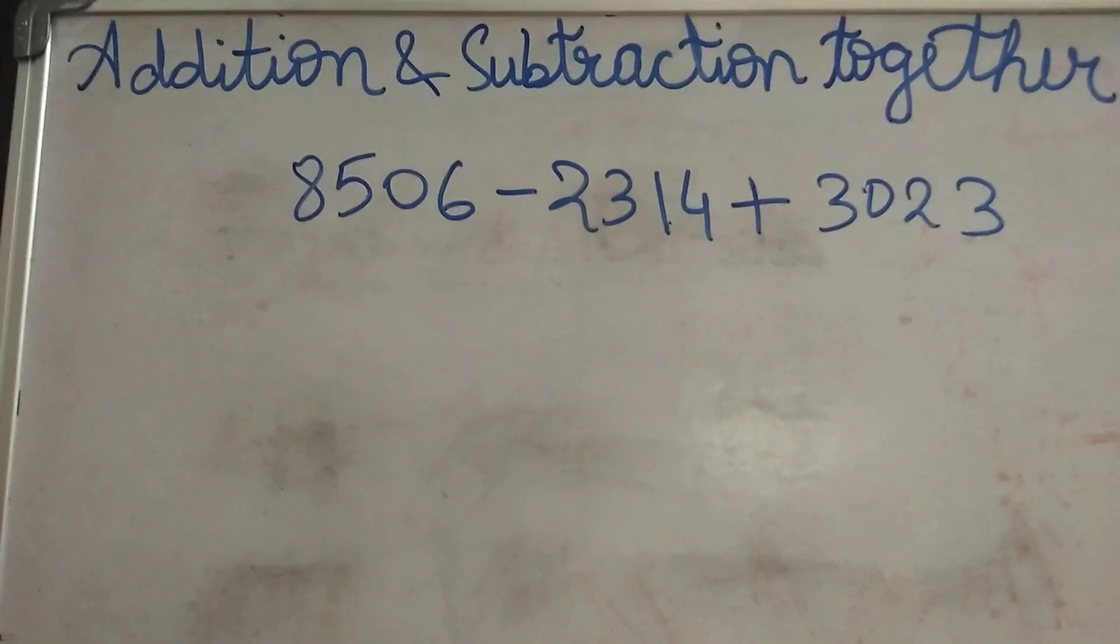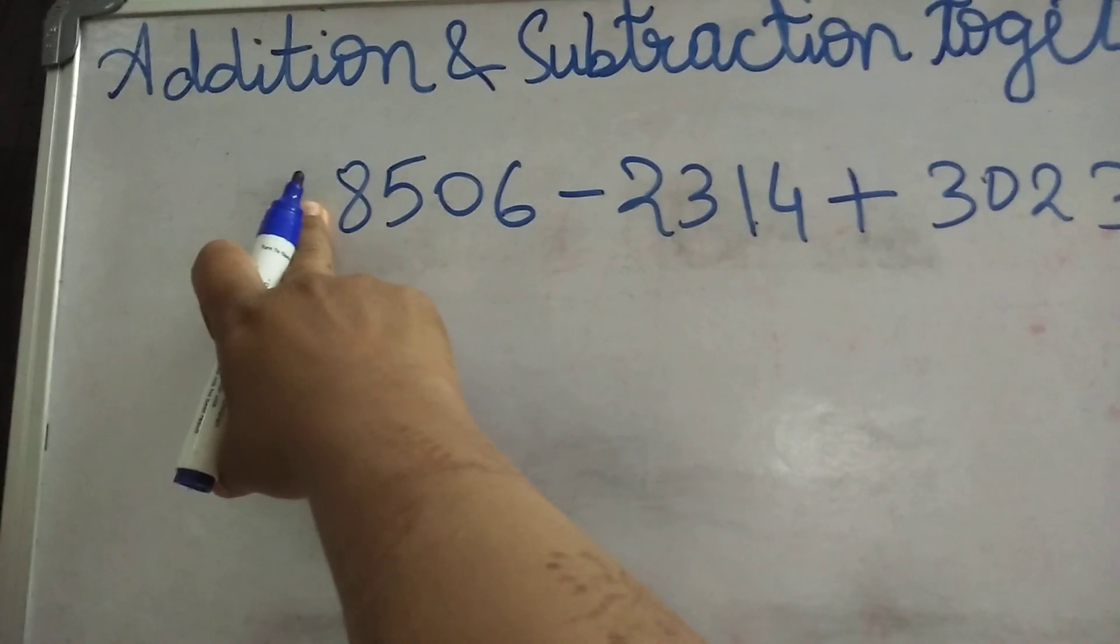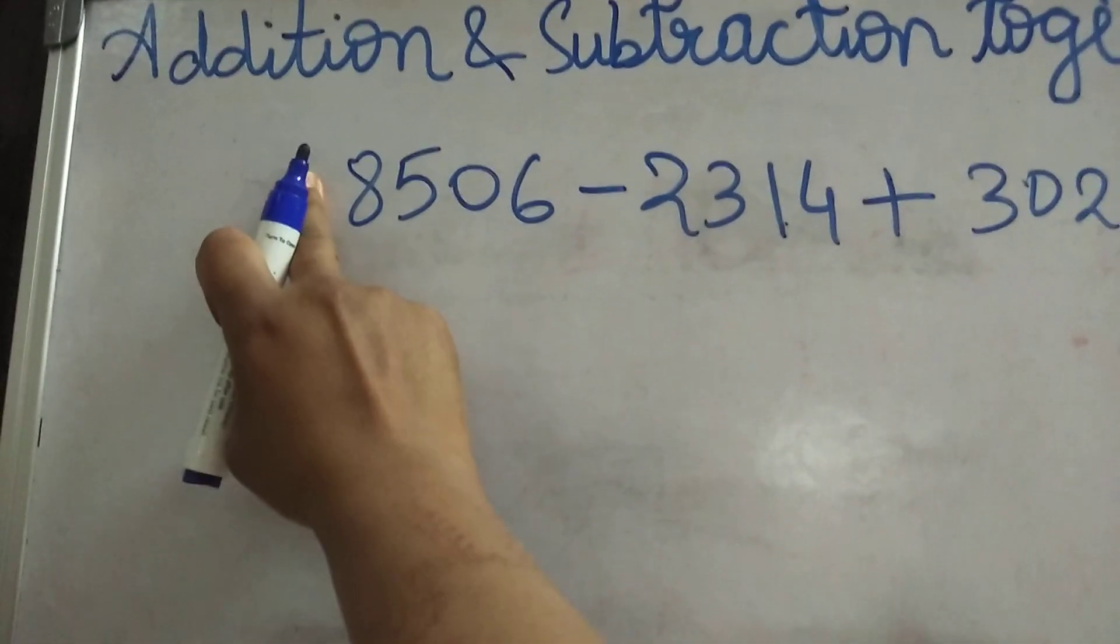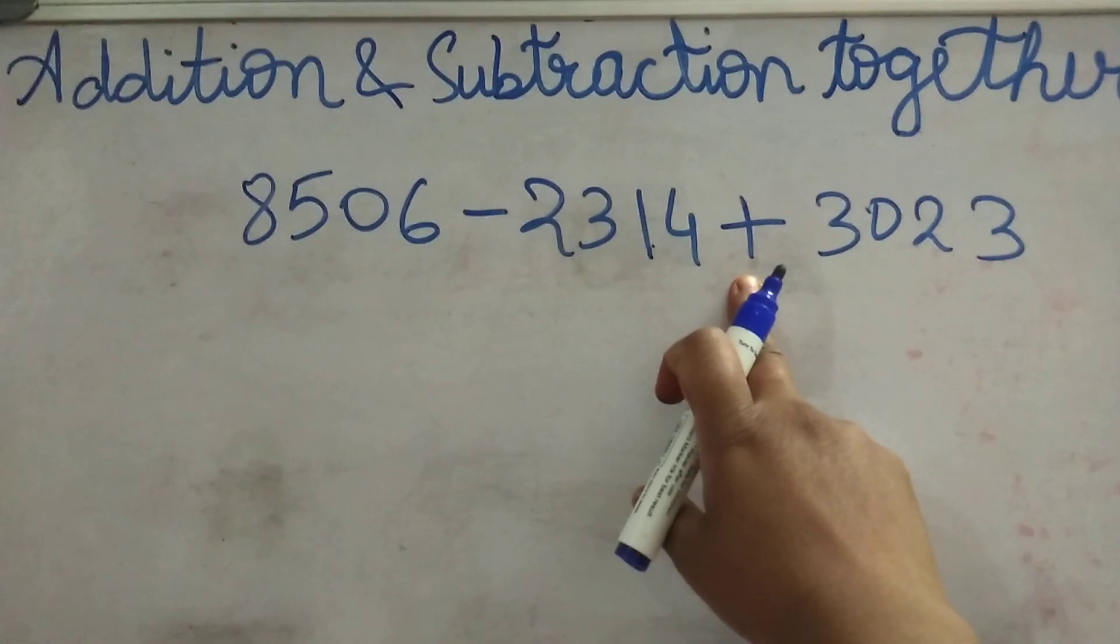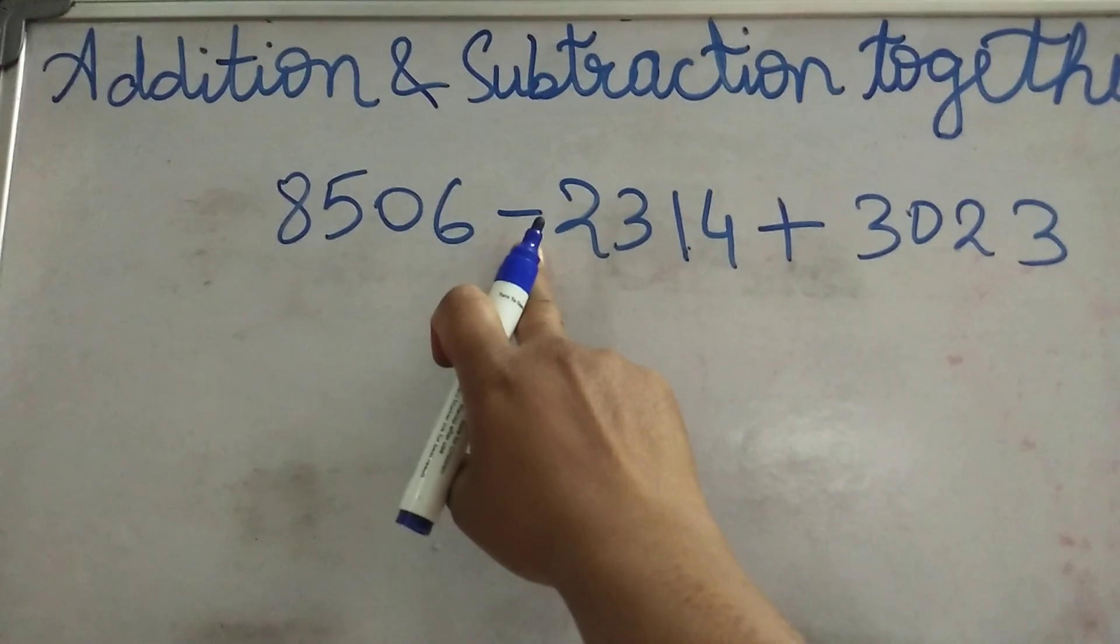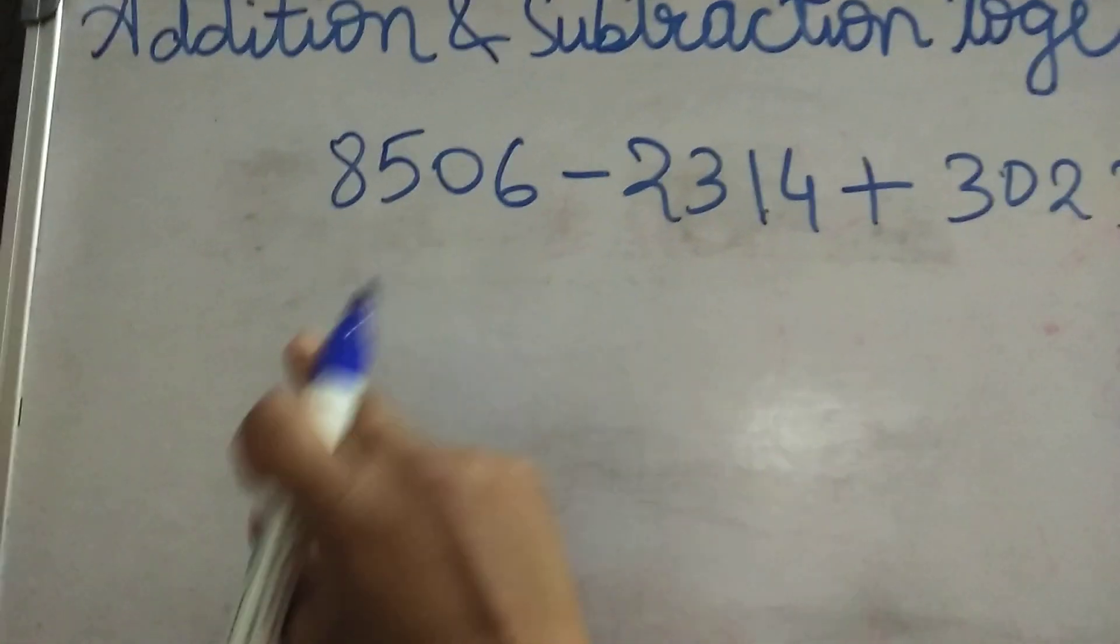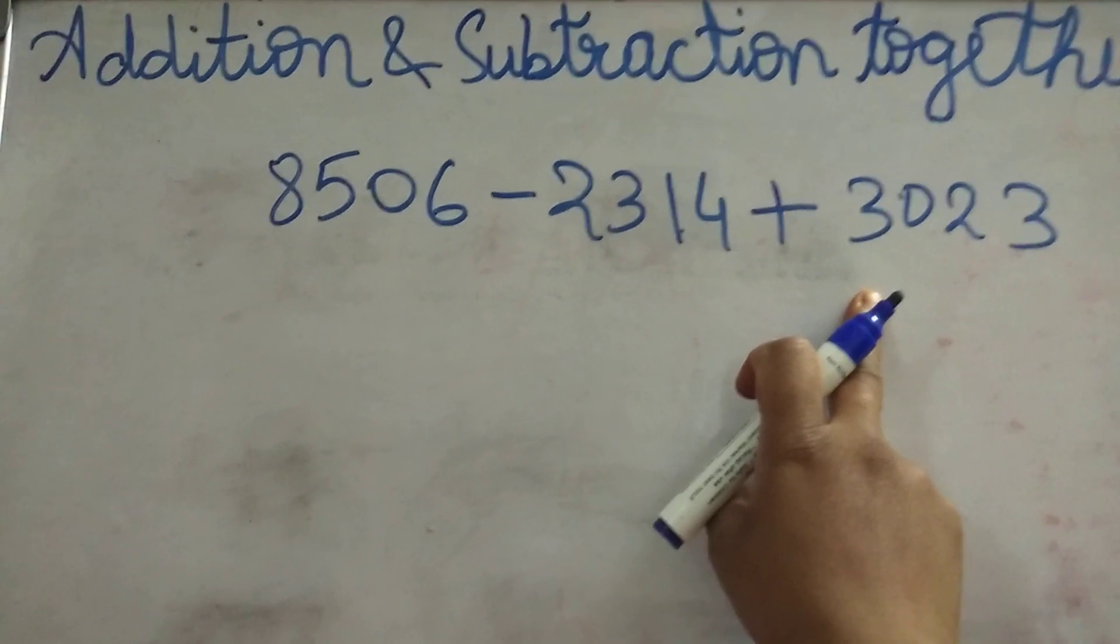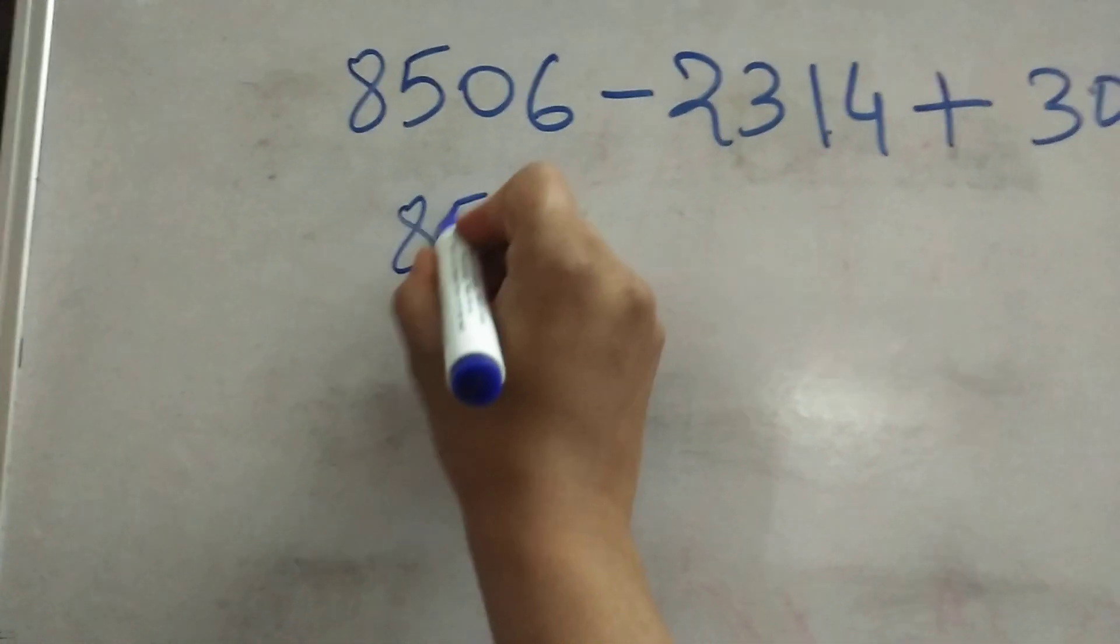Like if there is no sign before this number, then there is the sign of addition. And here before this number also the sign of addition. But this number carries the negative sign or subtraction sign or minus sign. So first we will see that these two numbers are for addition sign, so we will rewrite it.